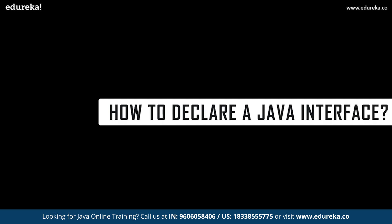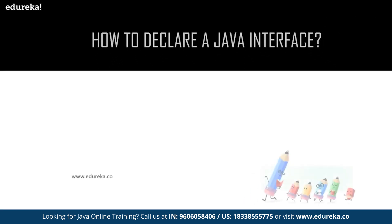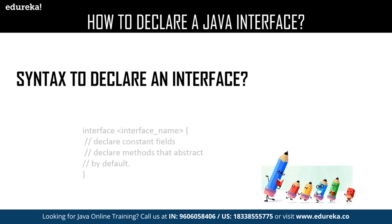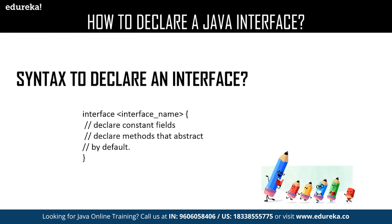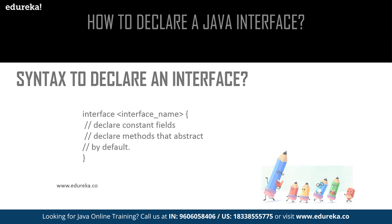Now let us have a quick revision about how to declare an interface. This is the syntax for declaring an interface where you will be using the interface keyword followed by the name of your interface. Inside the interface, you can declare your methods. By default, all the methods which you declare in an interface are considered to be public.